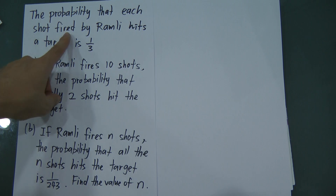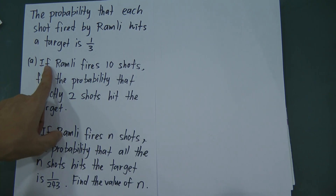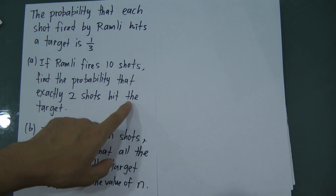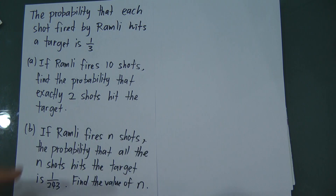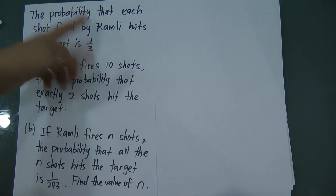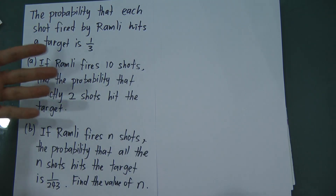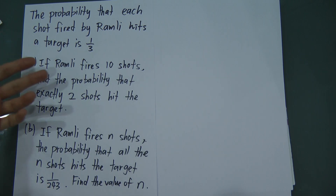The question says: the probability that each shot fired by Ramley hits the target is 1/3. If Ramley fires 10 shots, find the probability that exactly two shots hit the target. Since the probability of hitting is 1/3, the probability of not hitting is 1 minus 1/3, which equals 2/3.